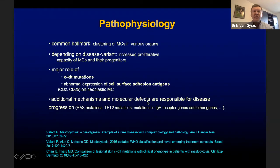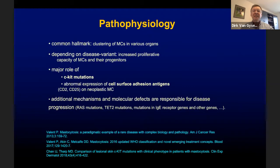All cases of mastocytosis share a clustering of mast cells in various organs. In some disease variants, increased proliferative capacity of mast cells and their progenitors is seen. A major role is played by CKIT mutations and by the abnormal expression of cell surface adhesion antigens such as CD25 on the cell wall of neoplastic mast cells. Additional mechanisms and molecular defects are responsible for disease progression.